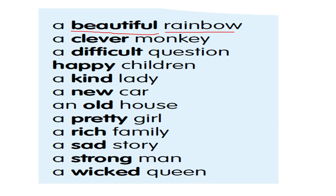So students: beautiful, clever, difficult, happy, kind, new, old, pretty, rich, sad, strong, wicked — these words are showing the quality of the noun or the subject. So these adjectives are called the adjectives of quality in the sentences.